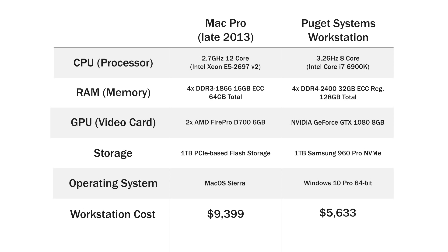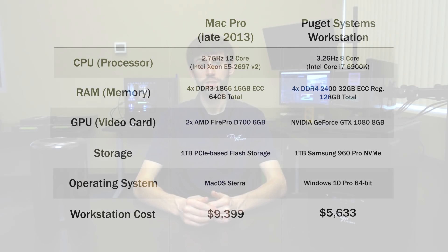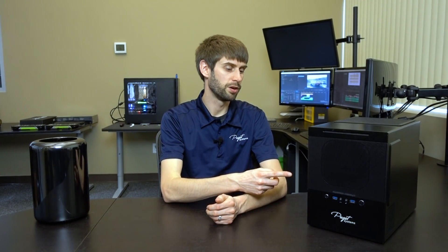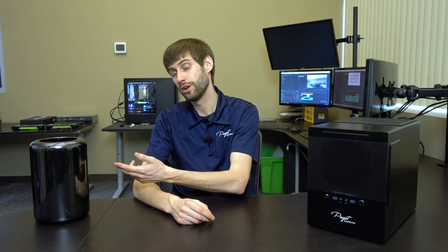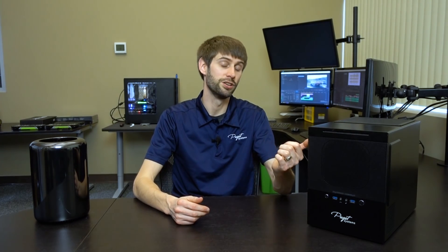Currently, we sell this workstation for $5,633, which is just a bit over half the price of the Mac Pro. It's worth noting that while we only have a single drive in our PC, normally we would actually recommend using either a 2 or even 3 drive setup, separating your project files from your disk cache and media cache. But since the Mac Pro can only take a single drive, we decided to match that limitation on our PC.